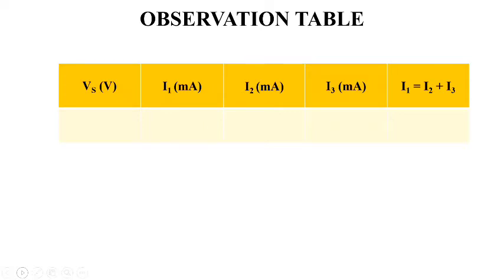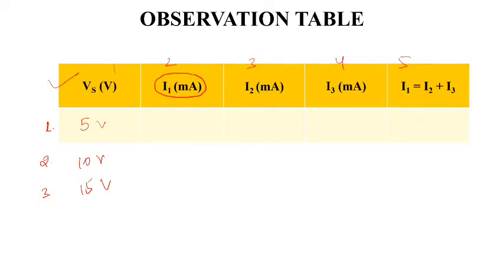Let us look at the observation table, which has five columns. The first column is source voltage — depending on how many readings you want to take, you can vary the source voltage as 5V, 10V, 15V, etc., so that Kirchhoff's Current Law can be verified for different values of supply voltage. Column two is current I1, which will be measured by connecting an ammeter in series with resistance R1.